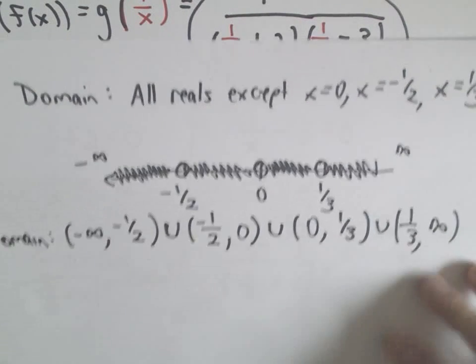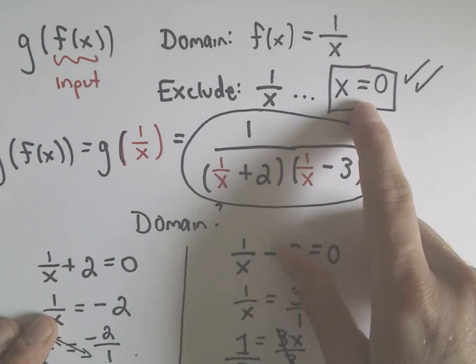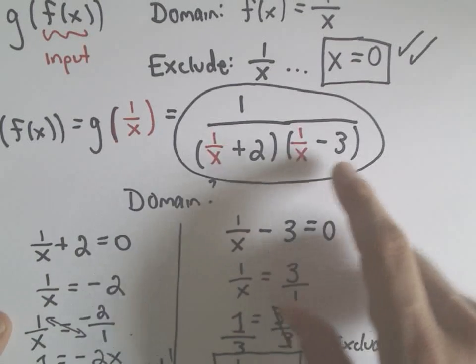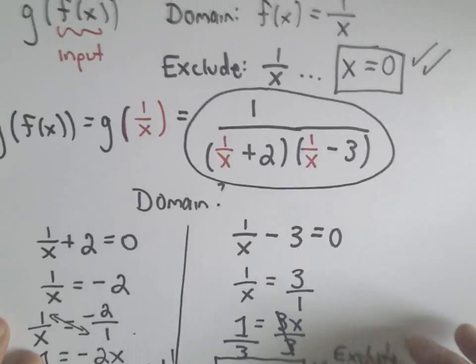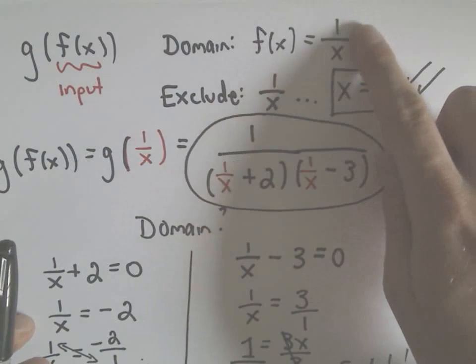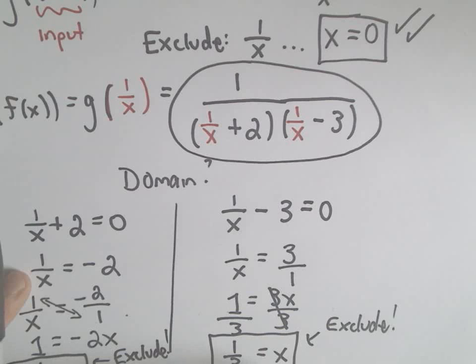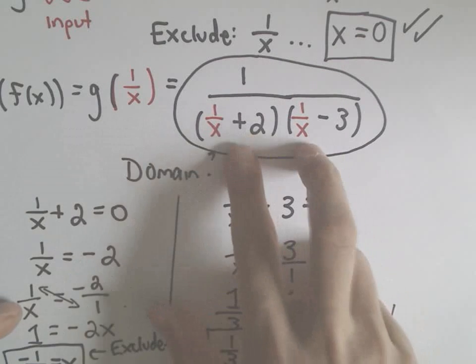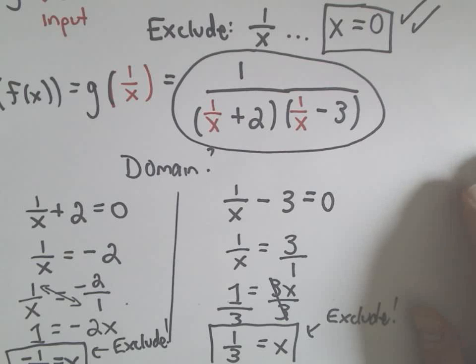So again, basic idea, one more time real quick. We looked at the input function, which in this case was 1 over x. We said you can't use x equals 0, because that gives you 0 in the denominator. And then we looked at the final composition as well, because even though certainly there's no problem putting negative 1 half or positive 1 third into the function 1 over x, there's no issues there. But the idea is, once you get that new value, and then you plug it into the g function, it actually messes things up, because then you do end up getting 0 in the denominator of the new fraction. So look at the domain of the input function, do the composition, think about the domain of that new function. And then you're just throwing out all the bad values, and that gives you the domain of the composition.